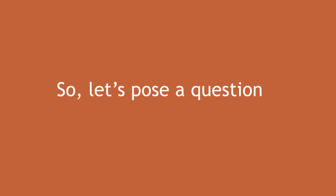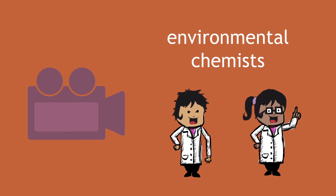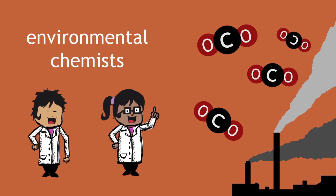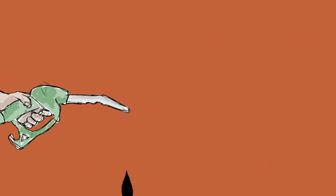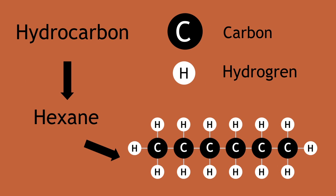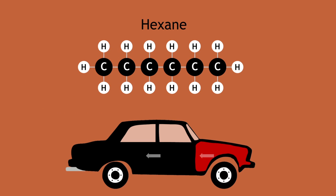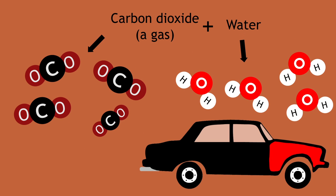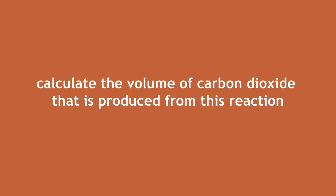So, let's pose a question. In my previous video, we talked about environmental chemists wanting to know how much carbon dioxide is produced from burning of fuel. A major part of petrol is a hydrocarbon called hexane. When it is combusted in a car engine, it produces carbon dioxide, a gas, and water. We're going to try and calculate the volume of carbon dioxide that is produced from this reaction.